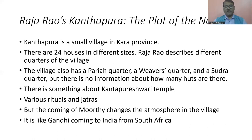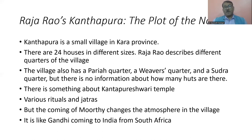Kanthapura is a small village in the Khara province with just 24 houses of different sizes. Raja Rao describes the different quarters of the village: the Pariah quarter, the Weaver's quarter, the Sudra quarter. Interestingly, characters have names like Corner House Murthy, Nose-Scratching Rangan, Nanjamma, and Waterfall Venkamma. Raja Rao made use of racy language and experimentation to decolonize himself from the colonial use of language. There is also a Kanthapureshwari temple, and various rituals and jatras take place in the village.